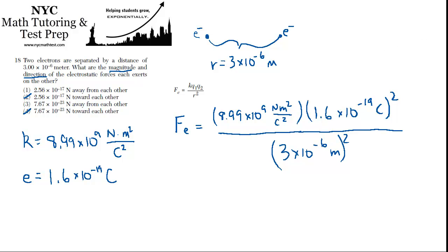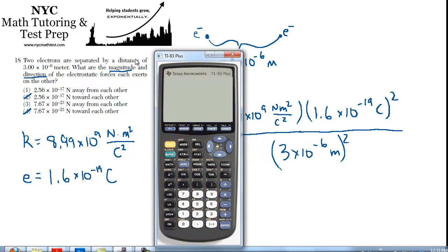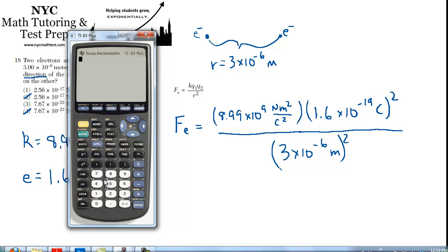Let's get out our calculator and make it happen. We've got 8.99E9, and that's being multiplied times 1.6×10^-19, but then that's being squared, and then it's being divided by 3×10^-6, and that's also being squared in the denominator. What's that equal?